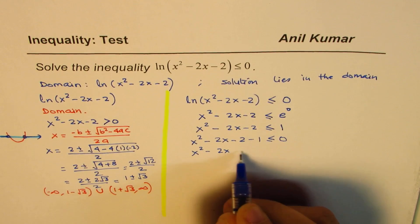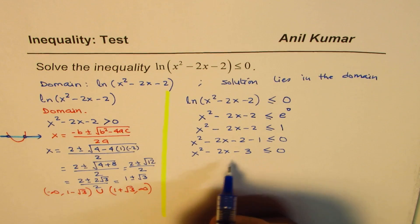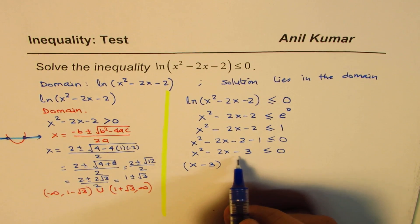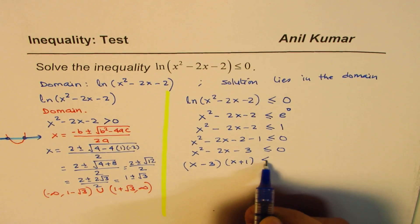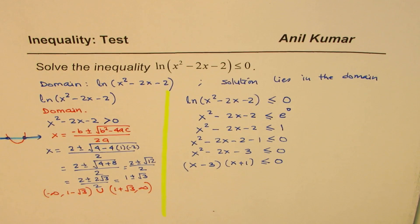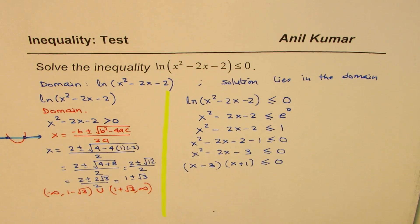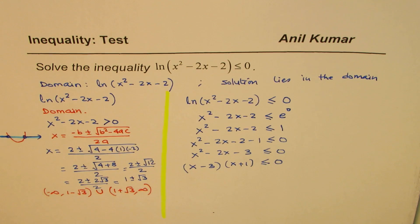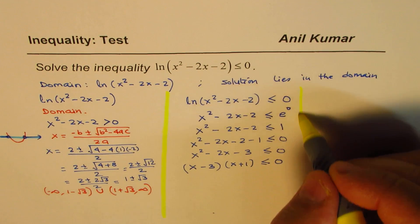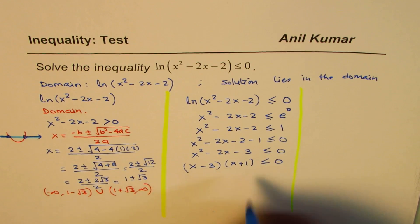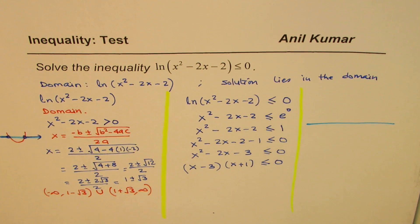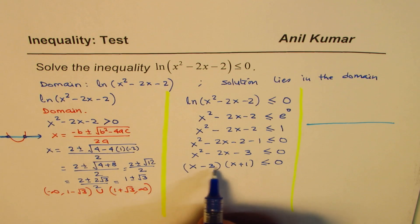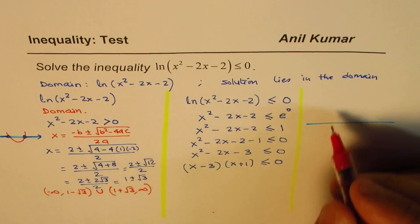Which gives x² - 2x - 3 ≤ 0. Now this can be factored as (x - 3)(x + 1) ≤ 0 — since 3 × (-1) = -3 and 3 + (-1) = -2. We can solve this using the graphing method. So we have two zeros and the parabola opens upwards: one zero is at x = 3, the other is at x = -1.